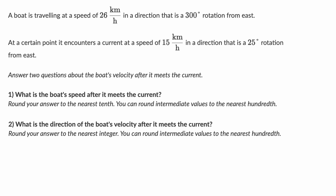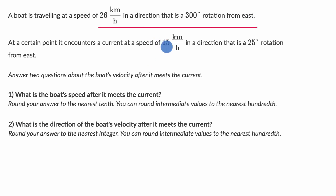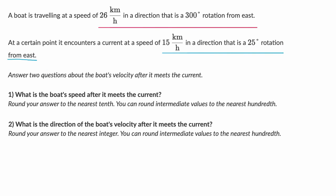Now let's work on this together. First, let's visualize each of these vectors. We have this vector — 26 kilometers per hour in a direction that is a 300 degree rotation from east. And we have this vector — 15 kilometers per hour in a direction that is a 25 degree rotation from east. So let me draw some axes here.